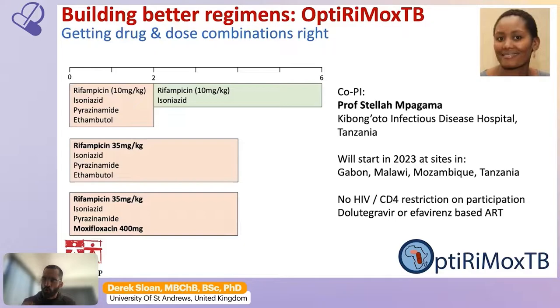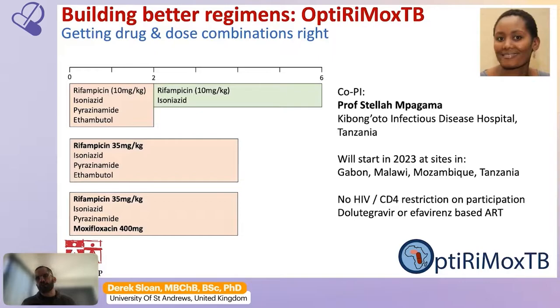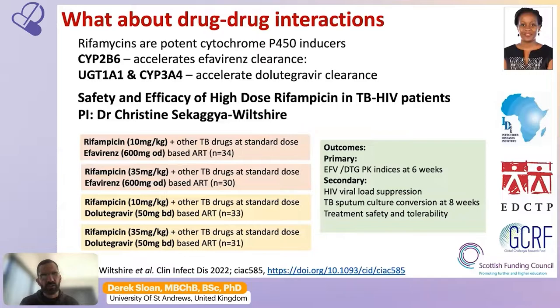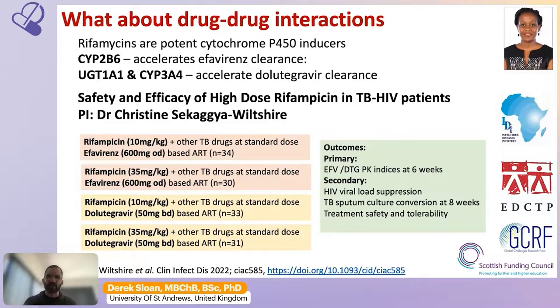More data should emerge on HIV populations on high-dose TB therapy; the data so far is encouraging but includes smaller numbers of HIV-positive patients. A common concern when postulating higher-dose TB drugs, particularly rifampicins, for HIV patients is the risk of drug-drug interactions. We know that rifampicins are potent cytochrome P450 inducers that can affect plasma concentrations of efavirenz and dolutegravir, and there is worry that increasing the dose of rifampicins will exacerbate that problem. Dr. Christine Sakadja-Wilcher conducted a study in Uganda to look specifically at that drug-drug interaction issue.